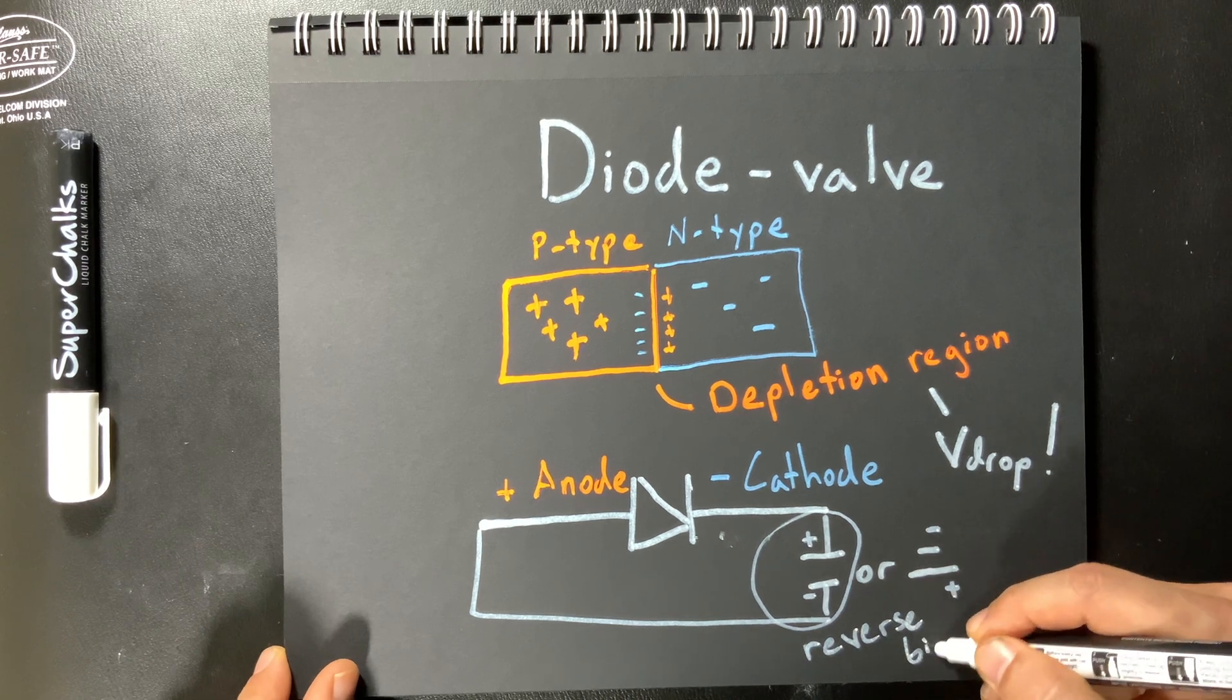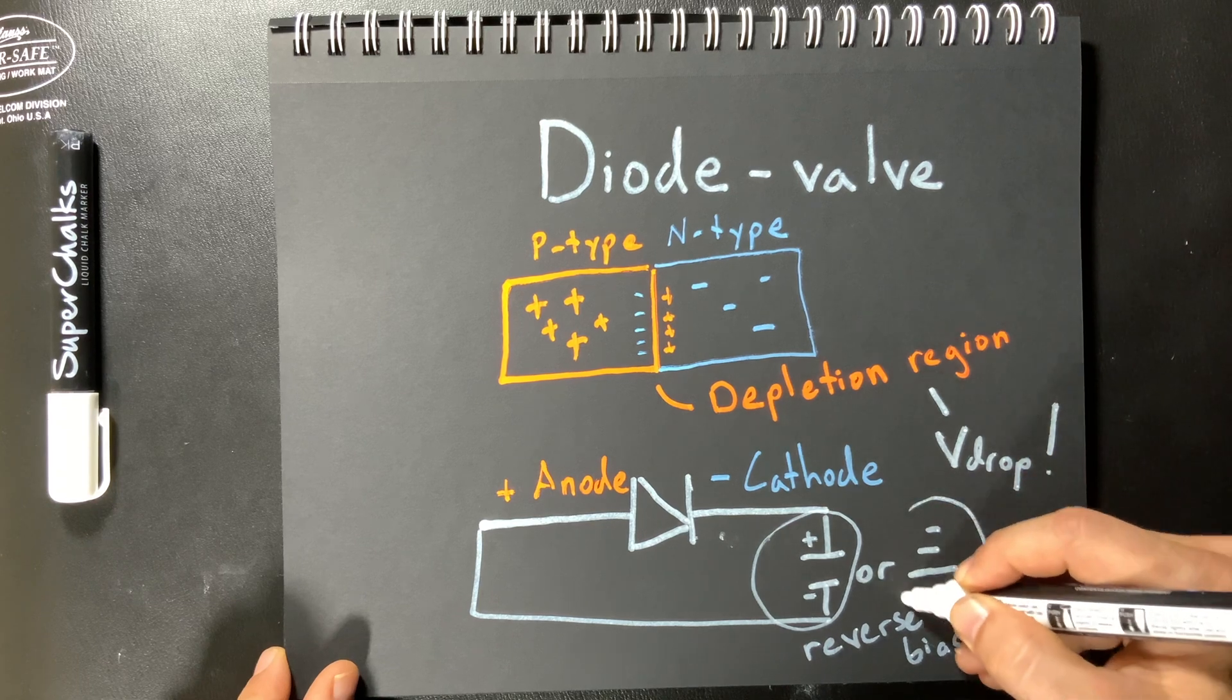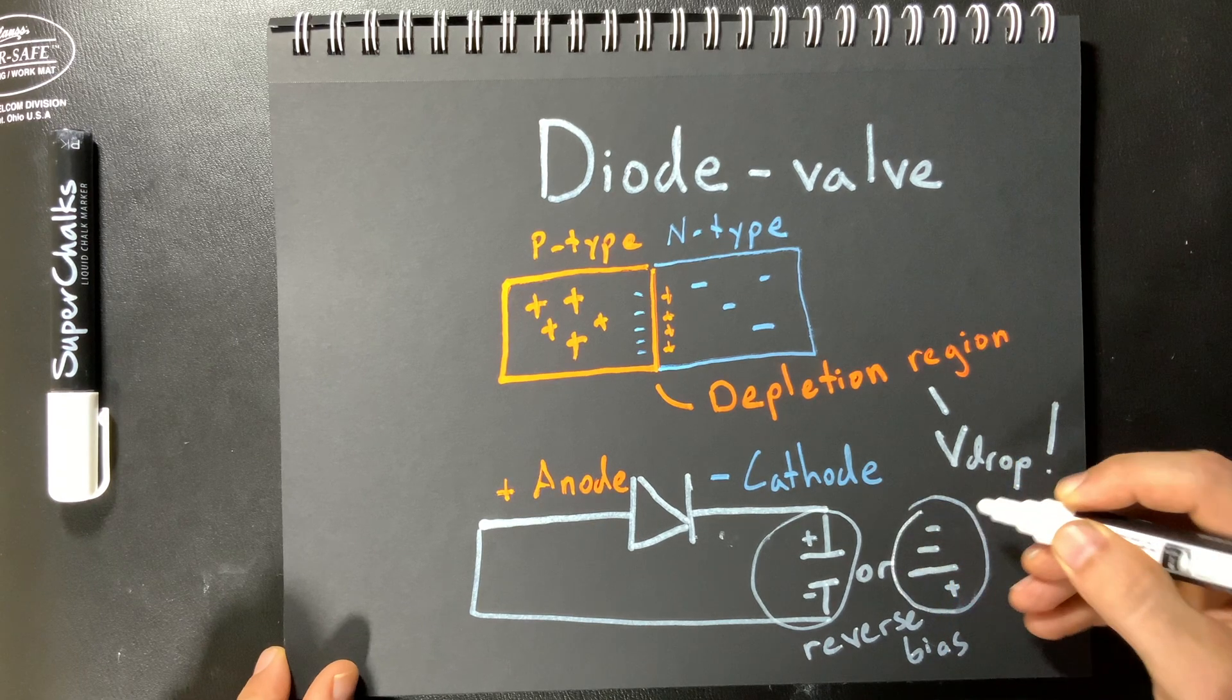Okay and in that sense without going into too much detail that is not the normative way we would use a diode. Typically we'd use a diode in what's called forward bias which is pictured in the latter.